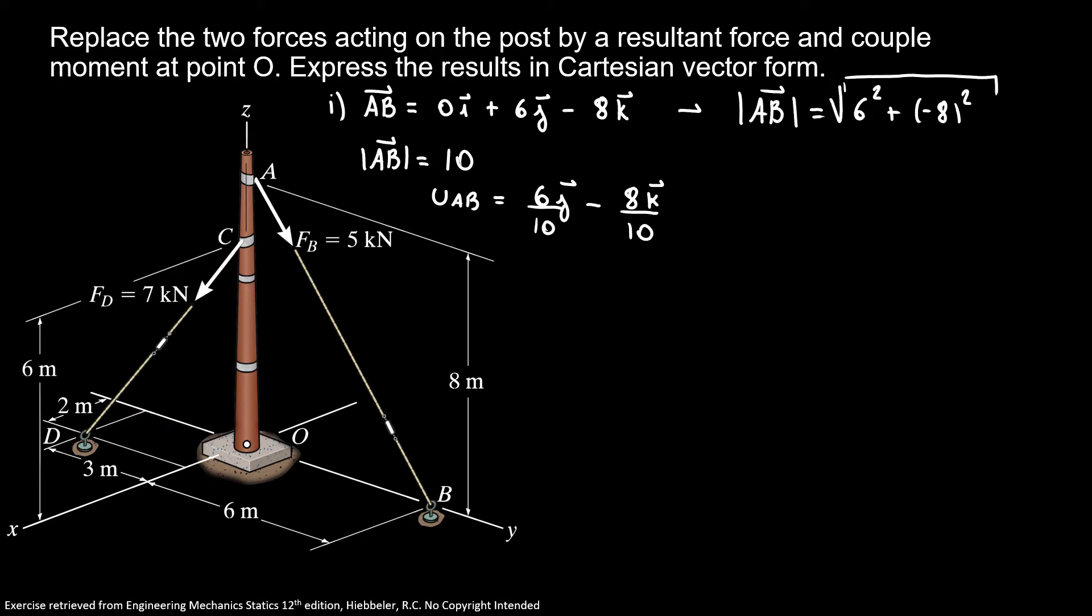Now our unit vector AB is equal 6j over 10 minus 8k over 10. Now I can find the vector form of my force B. Force B in vector form is the magnitude FB times the unit vector AB. So my vector force B is equal 3j minus 4k. Now we're going to keep this data and continue our problem.